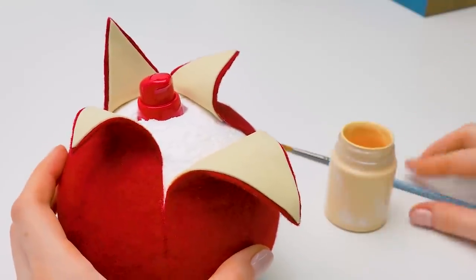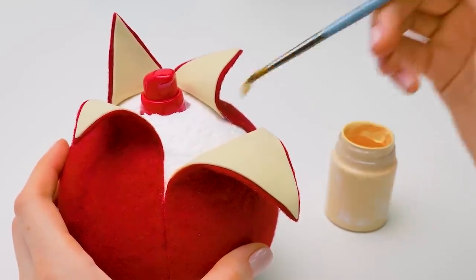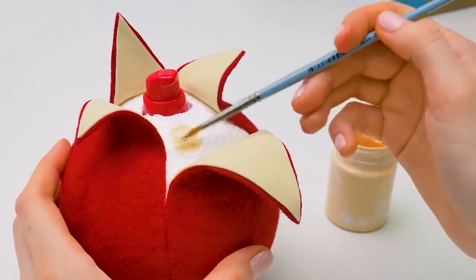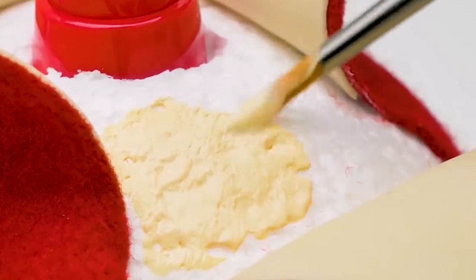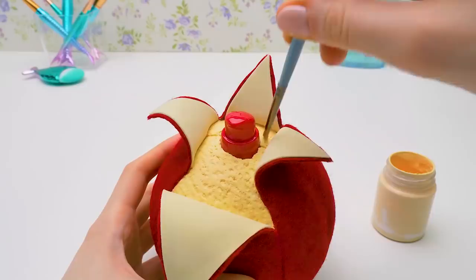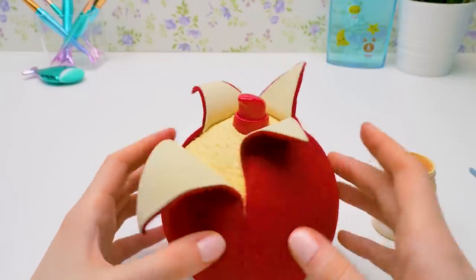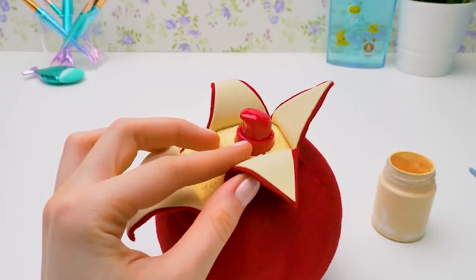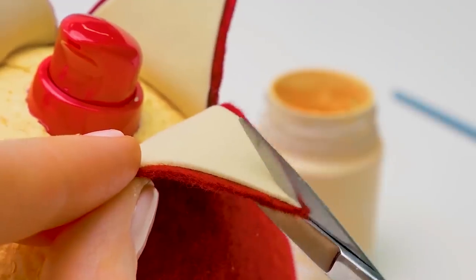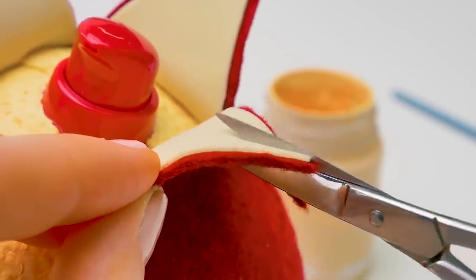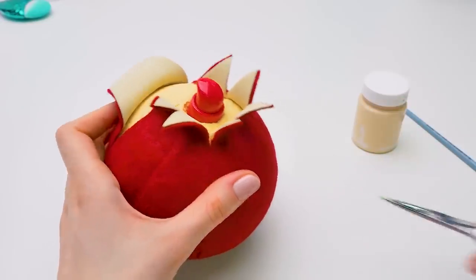We'll need some paint and a paint brush to give our pomegranate an even more realistic look. We'll use yellow paint just like the inside of the pomegranate skin. It looks almost done! Now let's cut the tips carefully. Uh-huh. And another one. Yes, just like this.